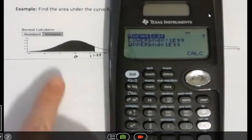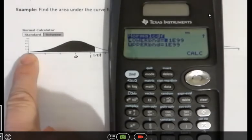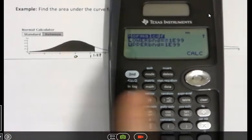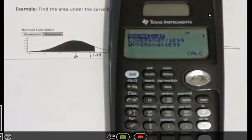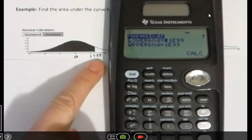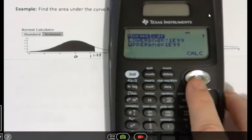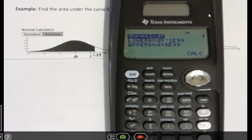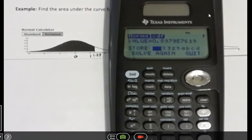In this particular example, our lower bound goes forever to the left. So we have negative 1e to the 99th power. But our upper bound stops right here at 1.27. So I'm going to go down into the upper bound area and put 1.27. And I'm going to hit calculate. I'm going to hit enter, and then hit enter again.